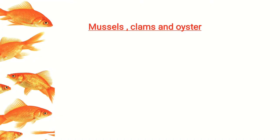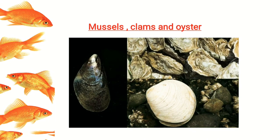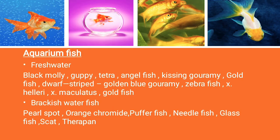The difference between mussels, clams, and oysters: mussels are of irregular shape and have byssal threads; clams are of regular shape with both shells of equal size; oysters have an irregular shape and are sessile. Mussels are also sessile, but clams are not.